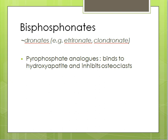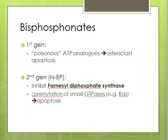Bisphosphonates are pyrophosphate analogues that essentially bind to the extracellular matrix of the bone and cause osteoclasts to undergo apoptosis. There are two main mechanisms. The earlier generations essentially disguised themselves as ATP analogues and caused apoptosis of the osteoclasts. The later generations have an extra nitrogen molecule and they work by inhibiting an enzyme called farnesyl diphosphate synthase.